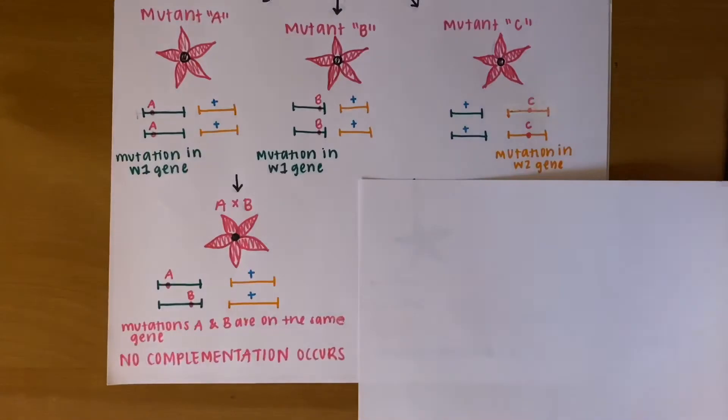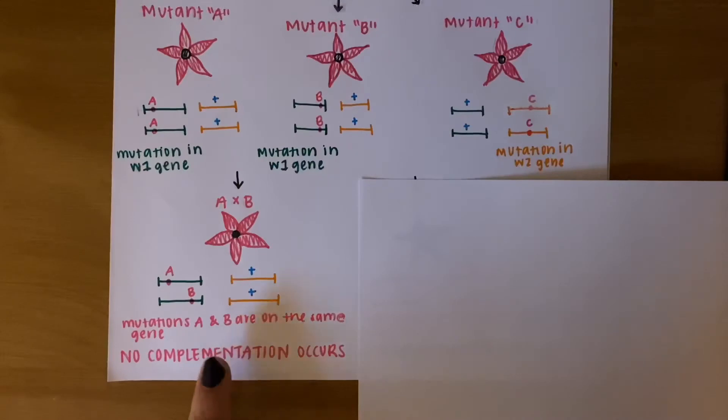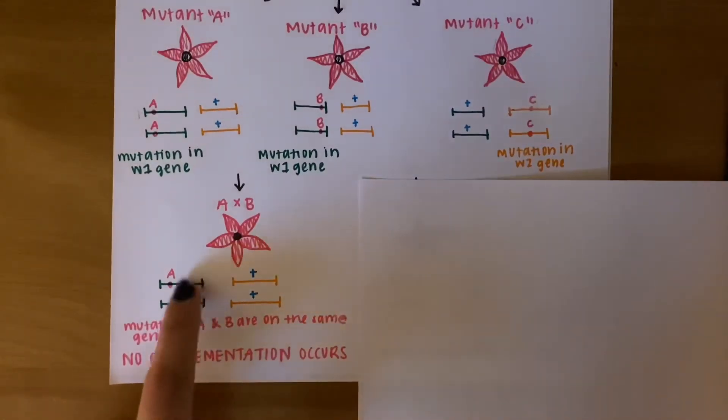Here, we would observe the mutant phenotype. In this scenario, we would say that complementation does not occur because mutations are in the same gene.